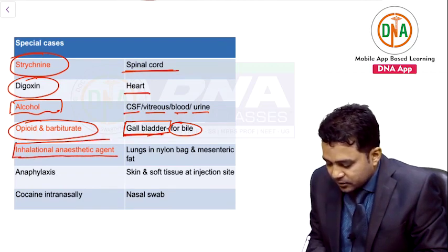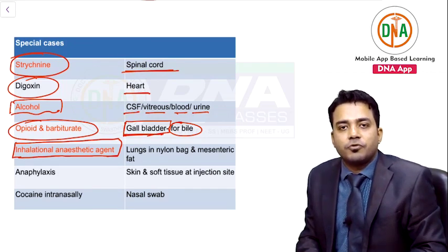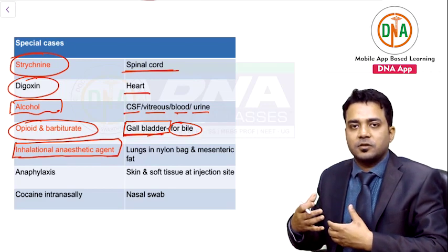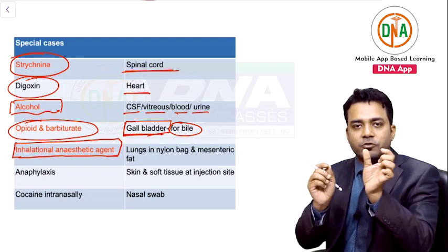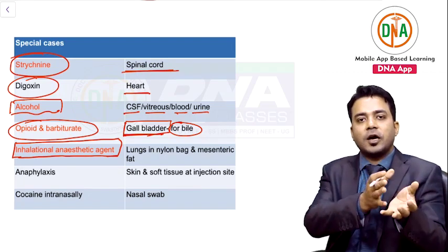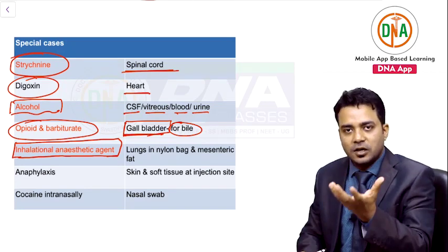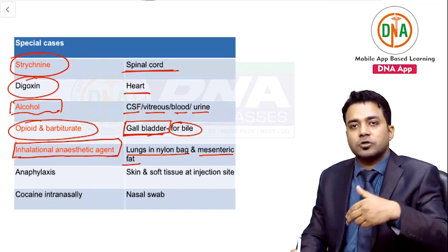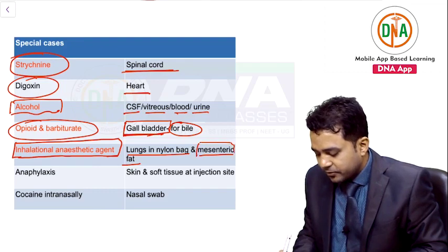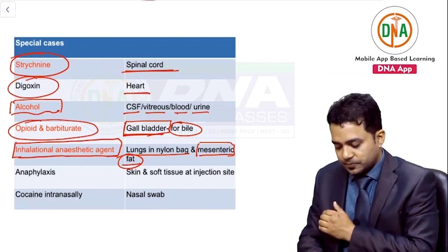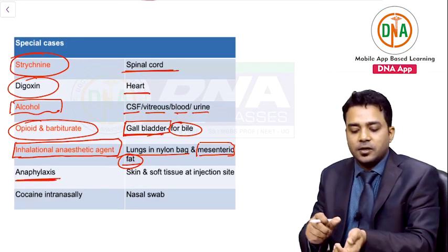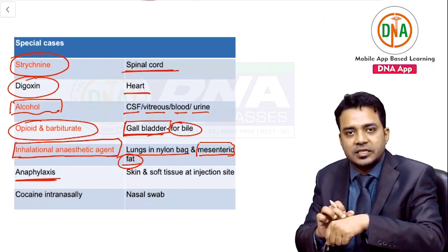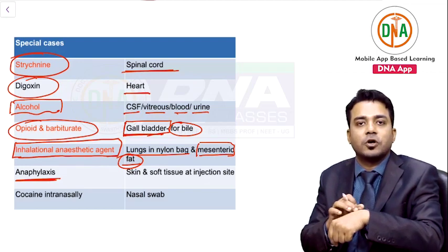For inhalational anesthetic agent deaths — e.g., excess isoflurane — intact lungs are preserved: the bronchus is cut with double ligature and the whole lung is preserved in a nylon bag. The mesenteric fats are also preserved, as these gases are concentrated there. In anaphylaxis (e.g., a drug addict dying from drug injection), the skin and soft tissues from around the injection site are preserved.